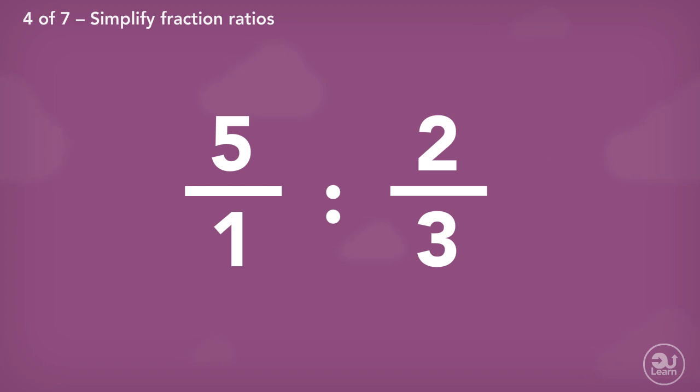Now we have the ratio 5 over 1 to 2 over 3. We next find a common denominator of both fractions in the ratio. To make both the denominators the same, we can multiply the first fraction's denominator by 3.